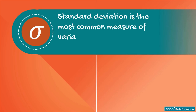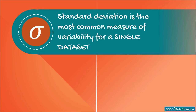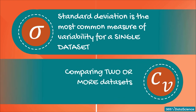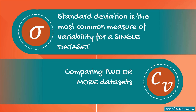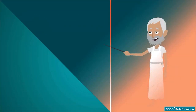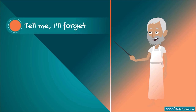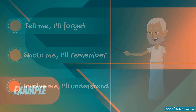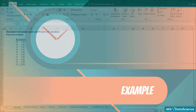Standard deviation is the most common measure of variability for a single dataset. But why do we need yet another measure such as the coefficient of variation? Well, comparing the standard deviations of two different datasets is meaningless, but comparing coefficients of variation is not. Aristotle once said: 'Tell me, I'll forget. Show me, I'll remember. Involve me, I'll understand.' To make sure you remember, here is an example of a comparison between standard deviations.